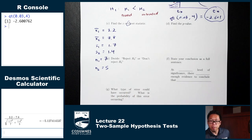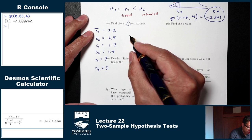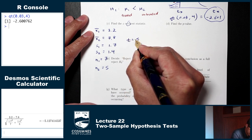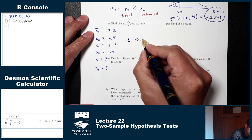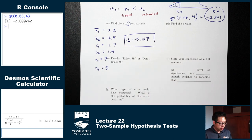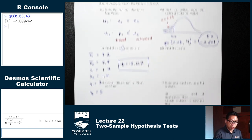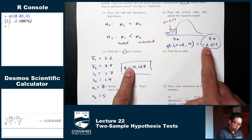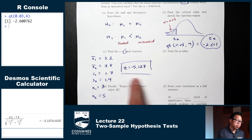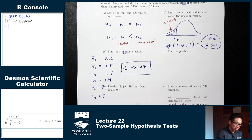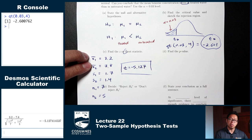Entering into the calculator gives T = −5.127. For a left-shaded picture, we expect both the critical value and test statistic to be negative. If you got a positive, you likely swapped your ones and twos.